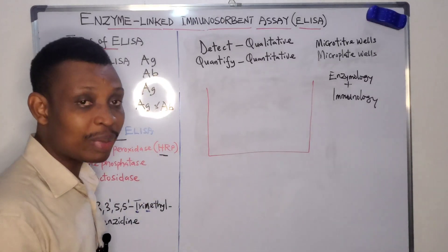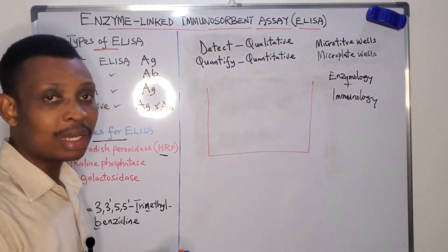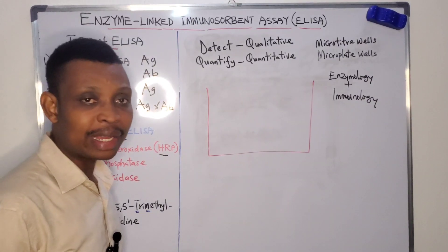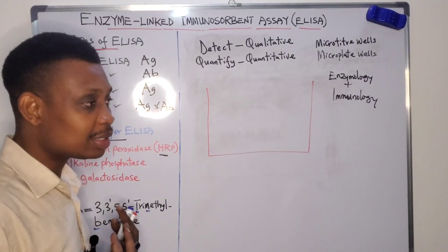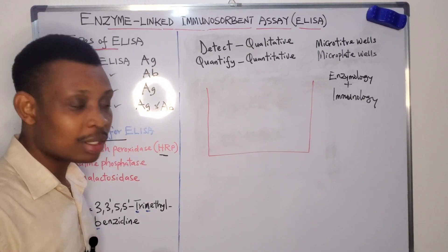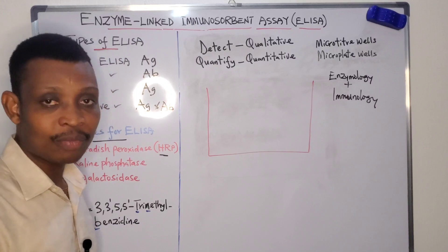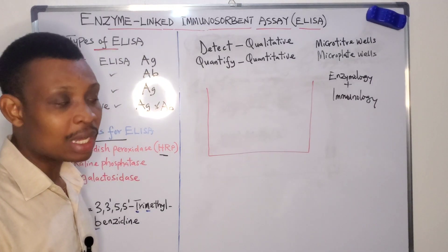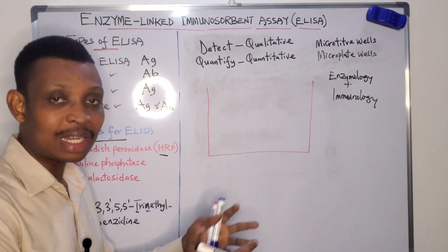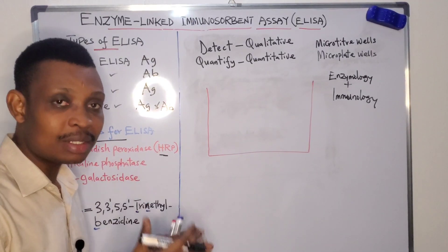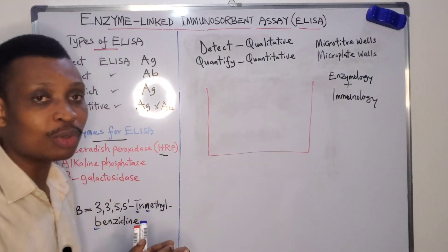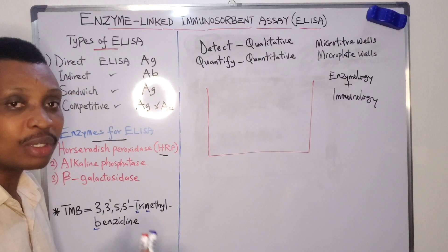ELISA basically makes use of the principle of antigen-antibody interaction. For this technique to be performed, there must be an antigen-antibody interaction — much like the immune system, where recognition of a foreign substance (antigen) triggers the production of antibodies, which then bind to antigens to form the antigen-antibody complex.